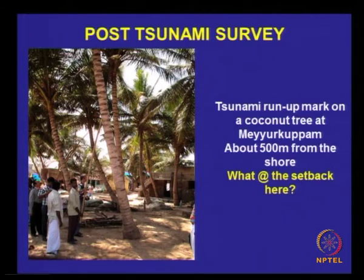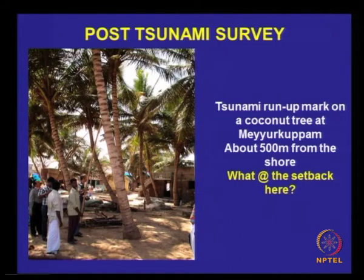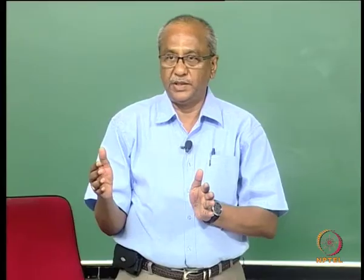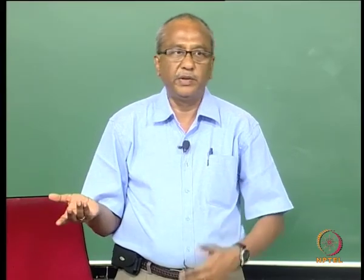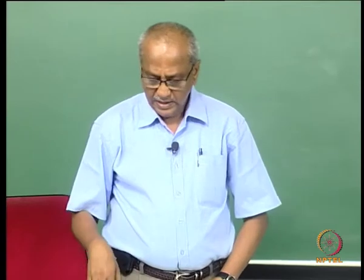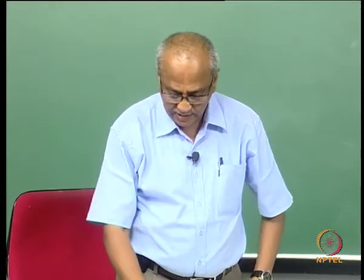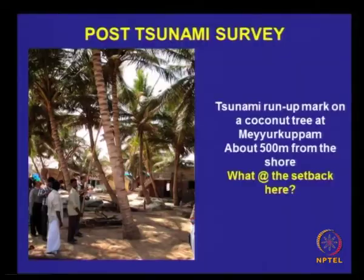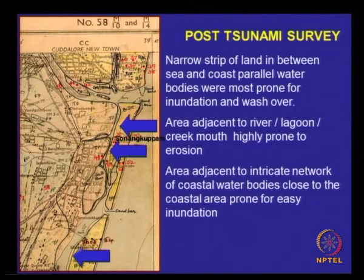I will come back to the set-back line later — about how close people can put up dwelling units from the coast. This is one important issue: they say you should not construct any building within 500 meters, but that rule cannot really be applied. We will discuss the coastal regulation zone towards the end of the talk.